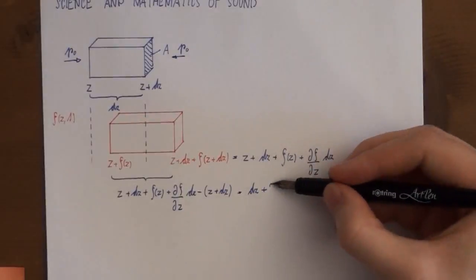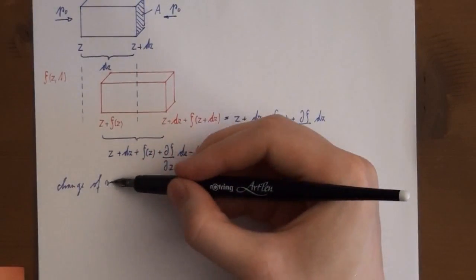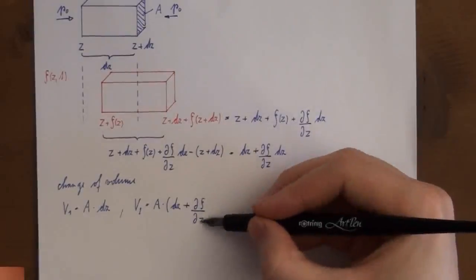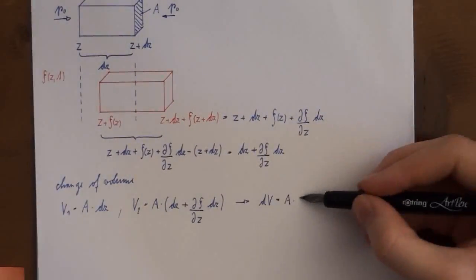It's easy to find that D Zeta over DZ times DZ is how much the right boundary moves compared with the left. Thus the change of volume is A times D Zeta over DZ times DZ.